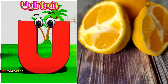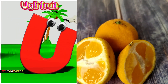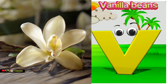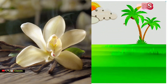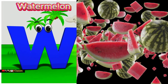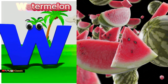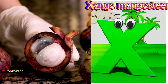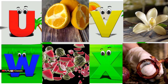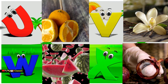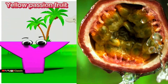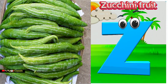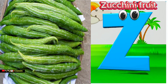U is for ugly fruit, uh-uh-ugly fruit. V is for vanilla beans, v-v-v-vanilla beans. W is for watermelon, w-w-w-watermelon. X is for xango mangosteen, x-x-xango mangosteen. Y is for yellow passion fruit, yeah-yeah yellow passion fruit. Z is for zucchini fruit, z-z-zucchini fruit.